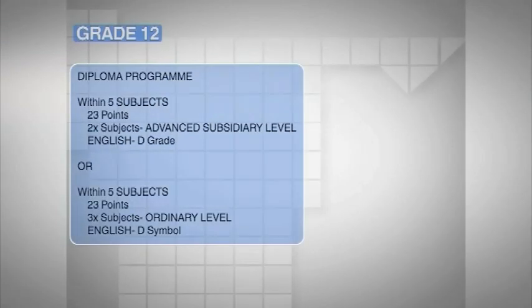For a diploma program, the notice reads, candidates have to obtain a minimum of 23 points in five subjects, two of which should be at Advanced Subsidiary Level with a D grade in English, or 23 points in five subjects, three of which should be at Ordinary Level with a D in English.